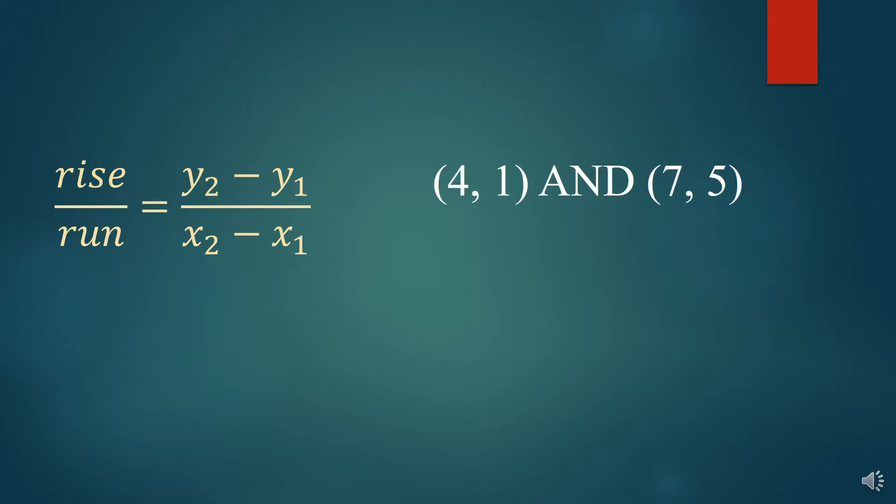Now, if you look at the first point here, 4,1, what we call that is our first x and our first y. So we call them x1 and y1. The next point, 7,5, this is our second x and our second y. And we call those x2 and y2.